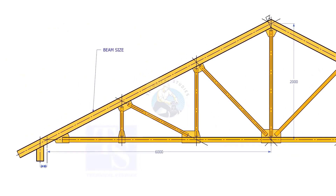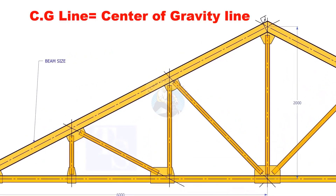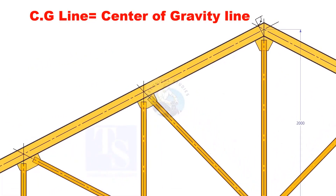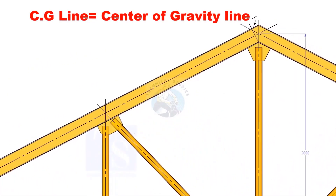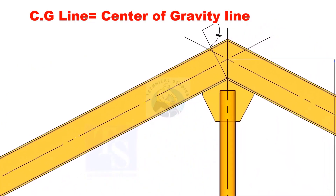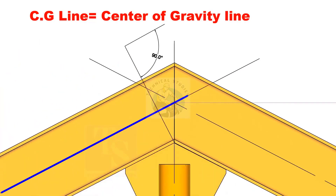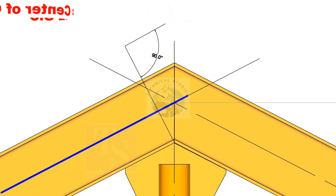In the drawing, usually the span and the height through the CG line of a truss are given. Remember that the CG line doesn't pass through the center of all the objects — it depends on the shape and cross section of an object.